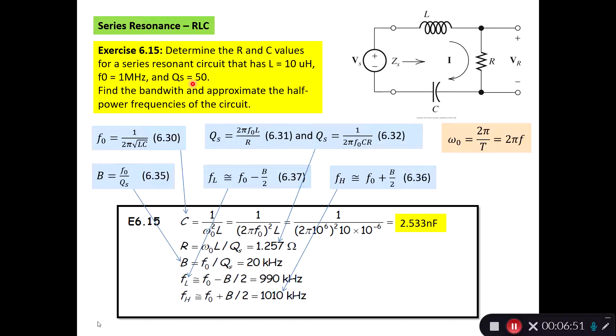Knowing that the quality factor is over 10, we can use the approximated frequency for the half-power frequencies. We get here fL approximate to the resonance frequency, that was 1 MHz minus the bandwidth. We calculate the bandwidth to be 20 kHz divided by 2, that is actually 10 kHz. So 1 MHz minus 10 kHz gives 990 kHz. And the approximated half-power frequency, the higher frequency of it fH, can then similarly be calculated to be 1 MHz plus 10 kHz. So this is the solution for it.